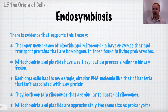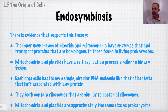Mitochondria and plastids are also about the same size as prokaryotes. There is a lot of evidence supporting the theory of endosymbiosis, which explains how eukaryotic cells with many different types of organelles came into being.